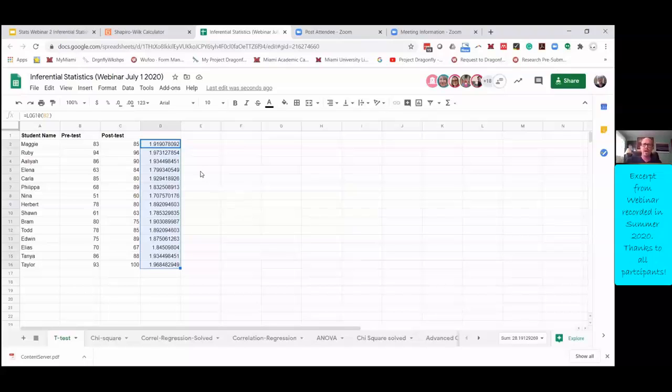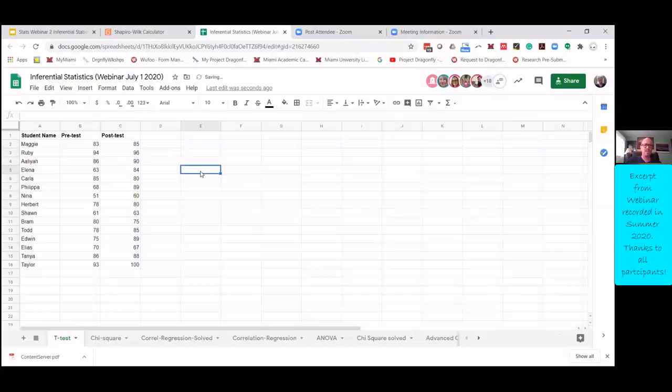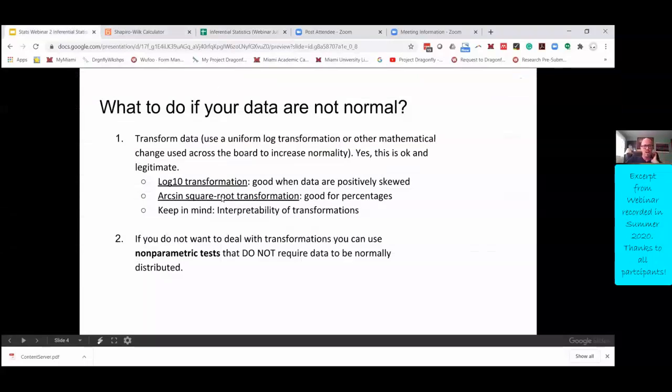Again, in this case, you don't have to do any transformation because the data is nicely normally distributed. Arc sine square root transformation, I just throw in there because that's good for percentages.